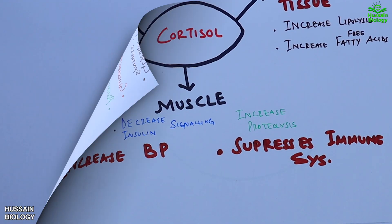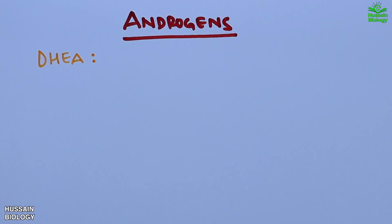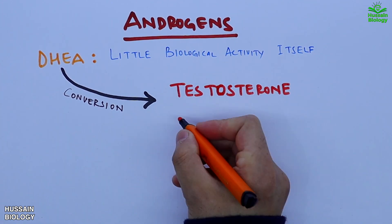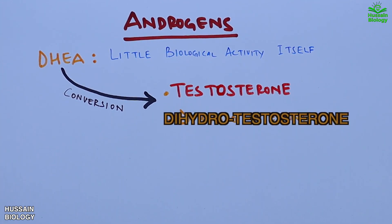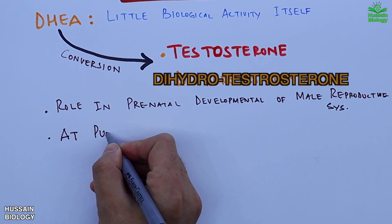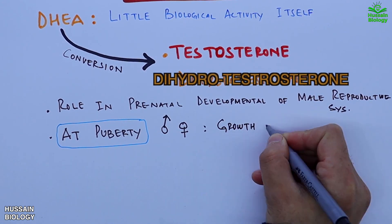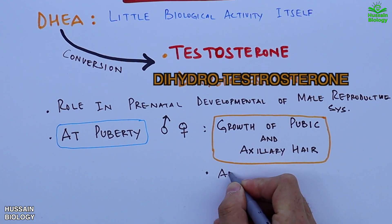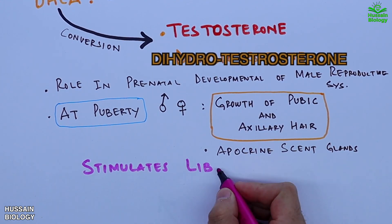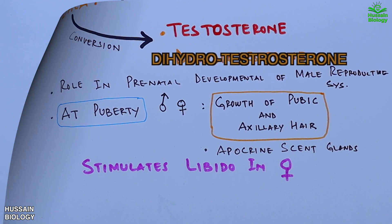Next are androgens like DHEA. DHEA itself has little biological activity, but its conversion to testosterone and dihydrotestosterone makes it a potent precursor of these androgens. These androgens play a crucial role in prenatal development of the male reproductive tract. At puberty in both sexes, they aid in growth of pubic and axillary hair, growth of apocrine scent glands, and androgens also stimulate libido in females.